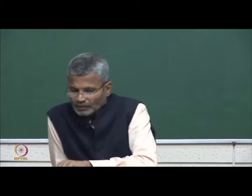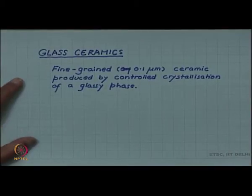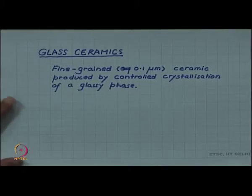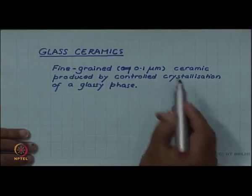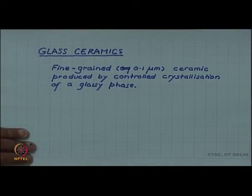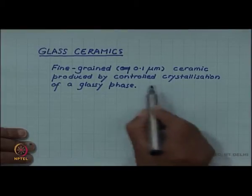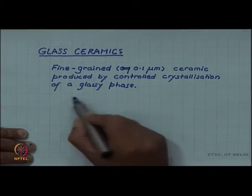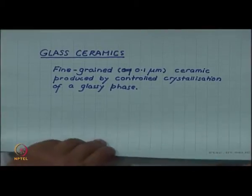Glass ceramic is an important class of ceramic material. Glass ceramics are ceramic materials which are very fine grained — 0.1 micrometer in diameter is the grain size — and they are produced by controlled crystallization of a glassy phase, which is why the name glass ceramic.